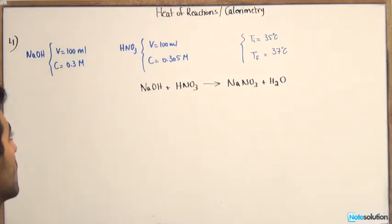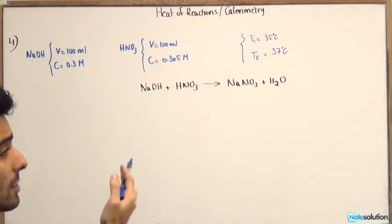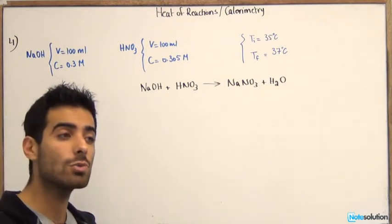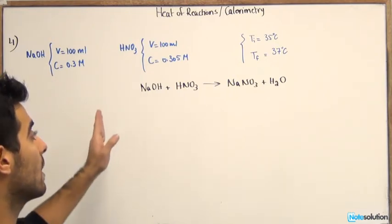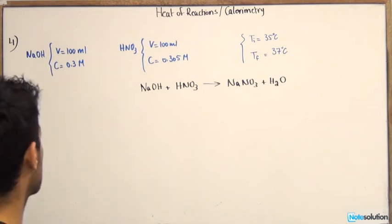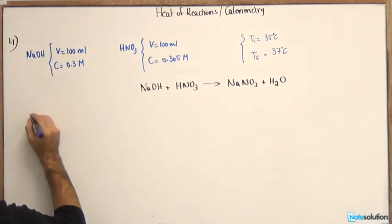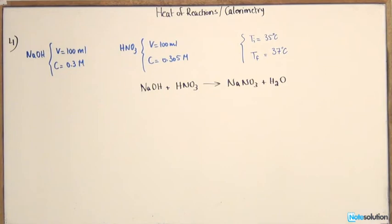So let's find the number of moles for NaOH and HNO3. We need to figure out which one is the limiting reactant and which one is in excess. That's the main thing you need to find out when you have reactions in calorimetry.